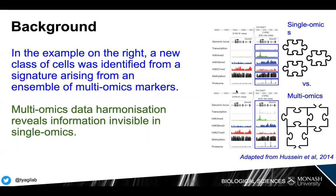In the example on the right, a new class of cells was identified from a signature which arose from an ensemble of multi-omics markers. We can see that there are different data types here: multi-omics, transcription data, histone data, methylation data, and proteome data. Individually, these blocks of information give valuable insight, but it's only when they're combined that we get a more complete picture of the biological system — in this case, a new category of cell was identified. Multi-omics data harmonization can reveal information that's invisible in single-omics data.